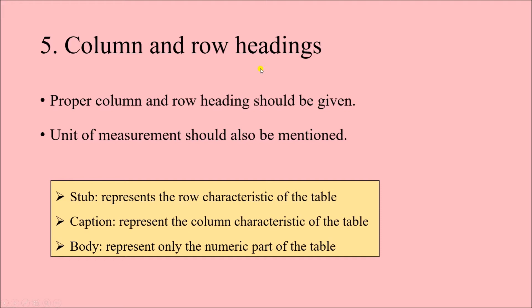Column and row headings are very important — from them we can understand what variable or finding has been presented. Proper column and row headings should be given, and the unit of measurement must also be mentioned, such as whether weight is in kilogram, gram, or pound, and whether height is in inches or centimeters, as the values will differ. Certain terminologies: 'stub' represents the row characteristic of the table, 'caption' represents the column characteristic, and 'body' represents only the numeric part of the table.